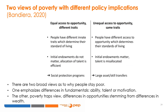The starting point is a classification by Oriana Bandiera presenting two views of poverty with different policy implications. On the one hand, some analysts think poverty is due to individuals having different traits despite equal access to opportunity — for this view, social protection programs like conditional cash transfers are appropriate. On the other hand, others argue individuals have the same traits but unequal access to opportunity, meaning initial endowments matter and talent is misallocated, requiring programs that provide large asset and skill transfers to help individuals escape poverty traps.